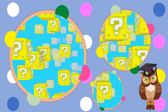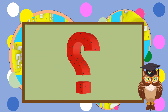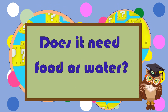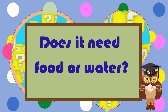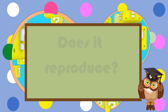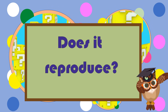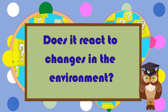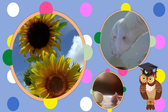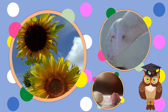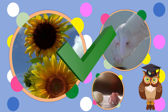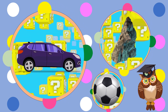When making the distinction, one should ask the following questions: Does this thing need food or water? Does it grow or change? Does it reproduce? Does it react to changes in the environment? If the answer is yes to all of these questions, then it is a living thing. If the answers are no, then it is a non-living thing.